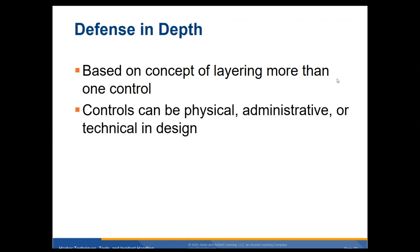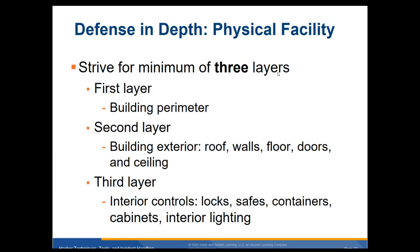Defense in depth is based on the concept of layering more than one control. Controls can be physical, administrative, or technical. Administrative is your policies, physical is your doors, locks, and facility, and technical would be your configurations on your routers, IDS, and switches. Strive for a minimum of three layers — talking about physical controls here: first layer is the building perimeter, second layer is the building exterior, roof, walls, floors, and ceiling, and the third layer is interior controls: locks, safes, containers, cabinets, and interior lighting. The administrative controls address how long you keep the material, how the people treat the material when using or processing it, and how long until you destroy it once it's no longer needed.